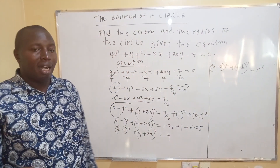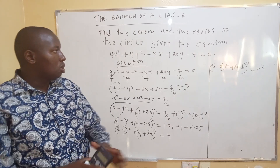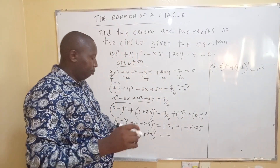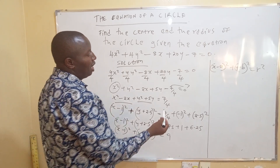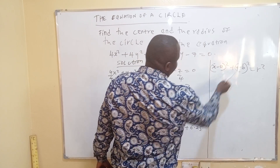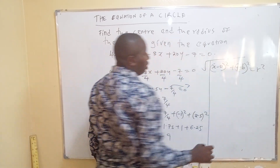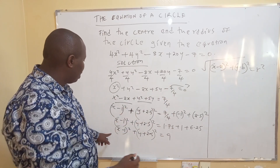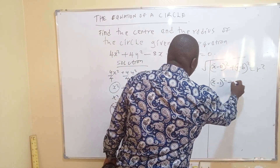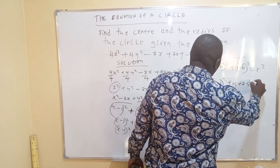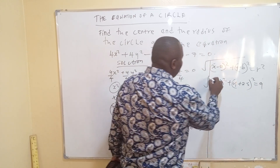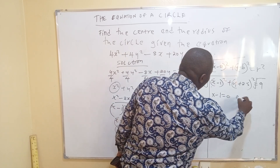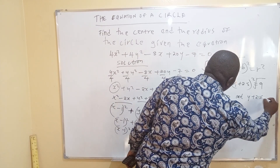Remember the general formula of the equation of a circle is (x minus a) squared plus (y minus b) squared equals r squared, where a and b are the coordinates of the center. To find the values of r, a, and b, find the square root of both sides.